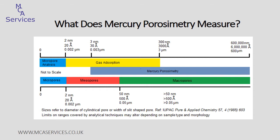Pore sizes can extend over several orders of magnitude, ranging from millimetres down to nanometres. There's no one single technique that can cover this complete range, and so a combination of techniques has to be used. Pore sizes are quite commonly classified as micropores. Gas adsorption is a complementary technique to this, and it's used to characterise the very smallest pores, within the micropore range and extending into the mesopore range.